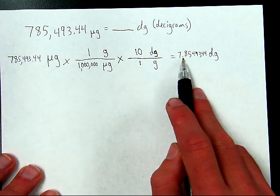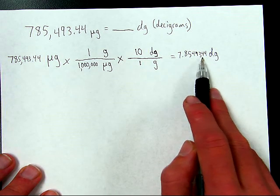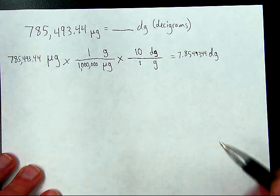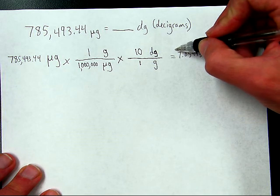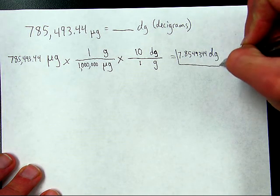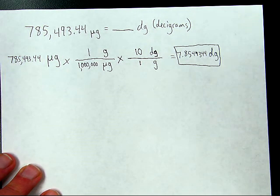Eight sig figs, and here we have eight significant figures also. In other words, no rounding is needed in this particular case, and so we can call it good, we can box the answer. That is what you need to call it good.